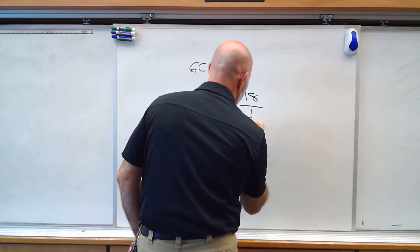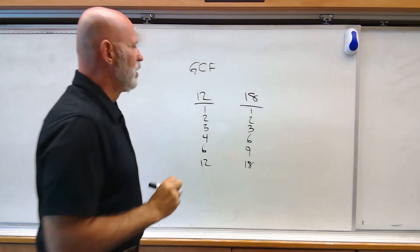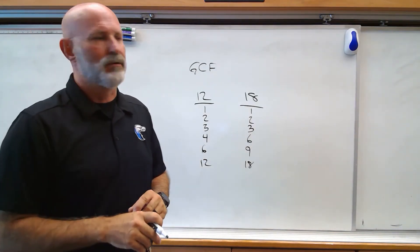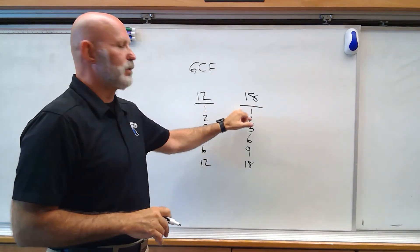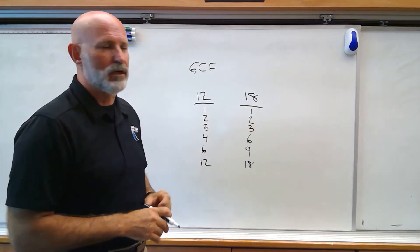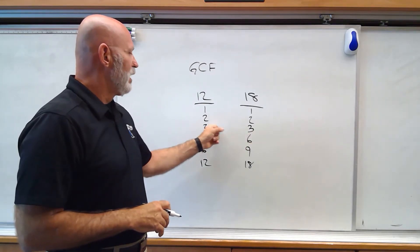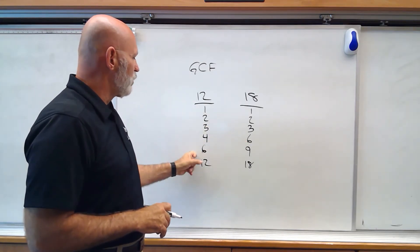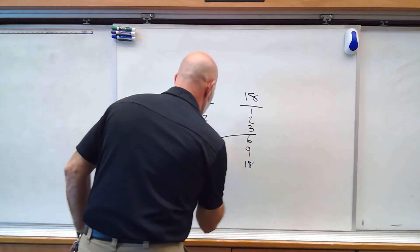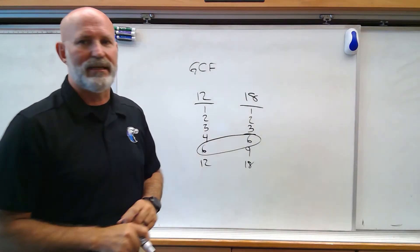Now for 18, we've got 1, 2, 3, 6, 9, and 18 — those are all the factors that go into 18. Now we're going to look at the greatest common factor. 1 will go into 12 and 18, but it's not the largest number. 2 will go into 12 and 18, but it also is not the largest. 3 will go into 12 and 18, but again it is not the largest. But 6 is the largest number that will go into both 12 and 18 evenly. So 6 is my greatest common factor — the greatest common factor of 12 and 18 is 6.